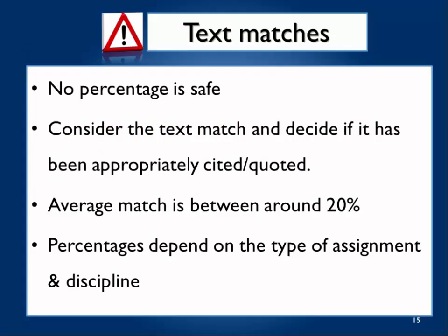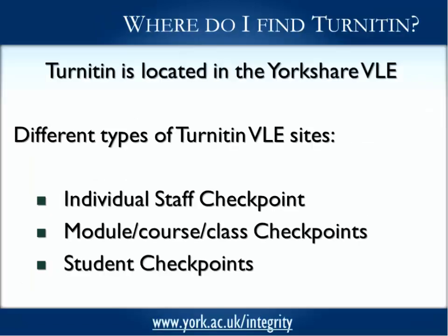So no percentage is safe here. You're not saying, over 25%, that's plagiarism — that's not the case. It very much depends on the assignment. A reflective piece might have 0% text matching because the student is writing in quite an original way about a topic nobody else has written about. Or it could be a law essay with lots of footnotes where it's up to 40% or 45% matches. You've got to consider the text match and decide if it has been appropriately cited or quoted. The average match is around 20%, but the percentages depend on the type of assignment and the discipline.